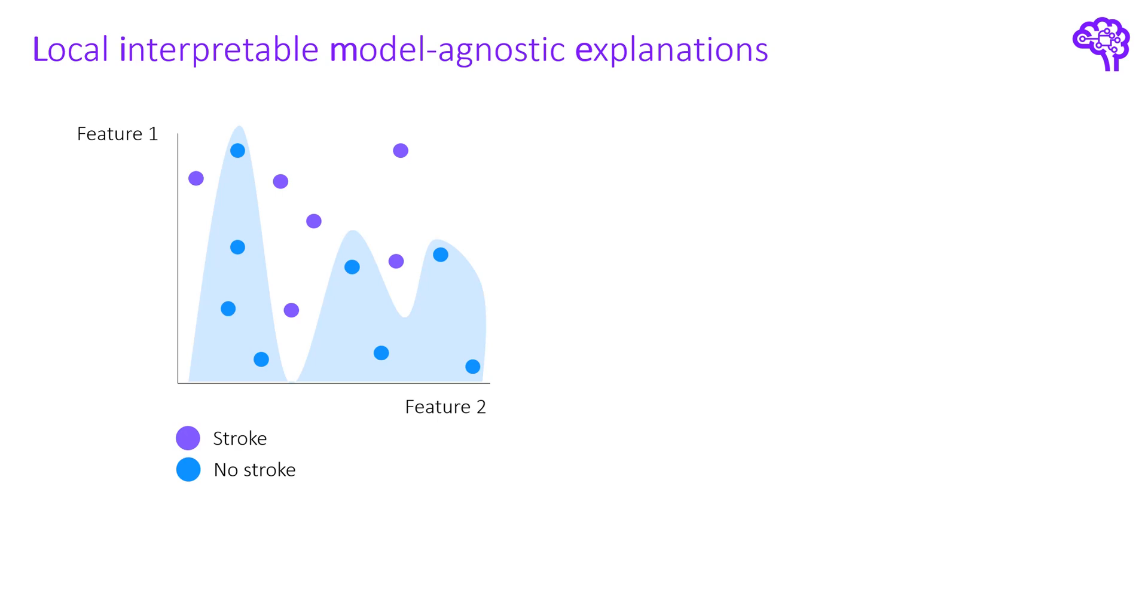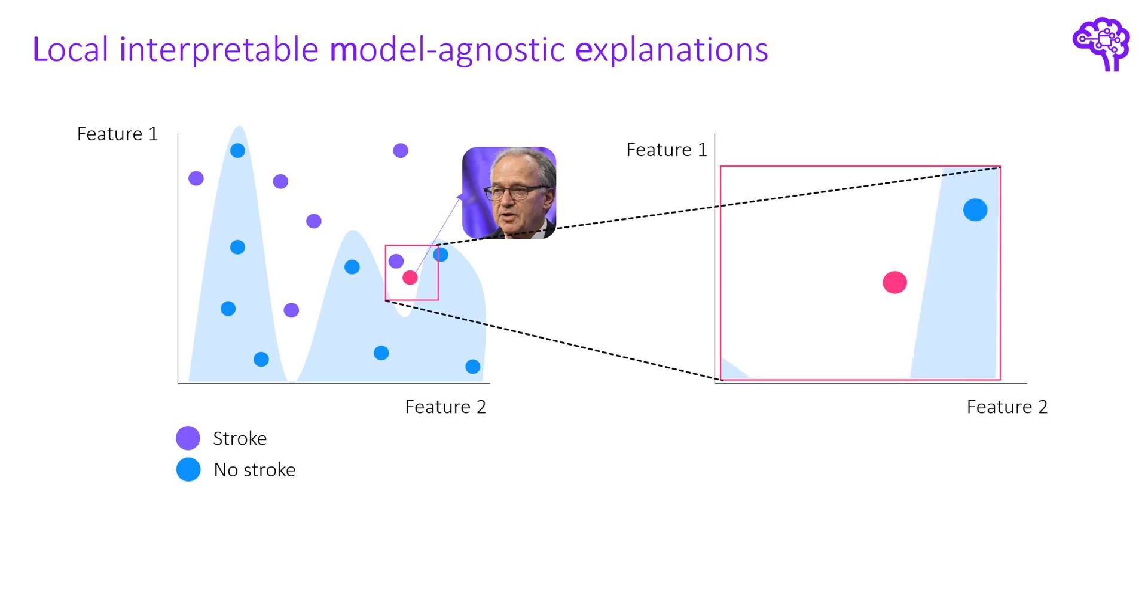If we make a prediction for John now, for instance stroke, how could we explain to him why our model outputs stroke? We cannot easily summarize the whole decision boundary into one explanation. The basic idea of LIME is that we just zoom into the local area of the individual prediction. There we can easily create a simple explanation that makes sense in that local region. This way we don't have to worry about the rest of the model and still get a valid explanation why that prediction was made.